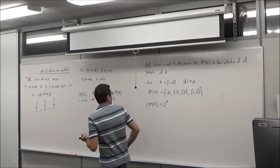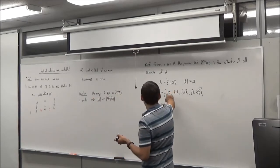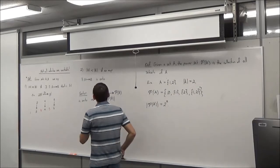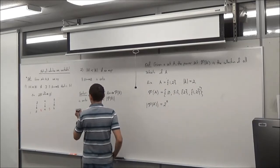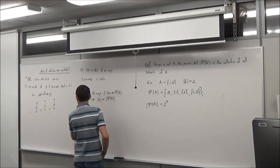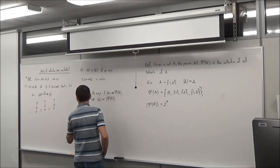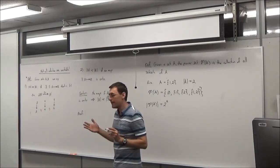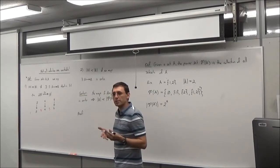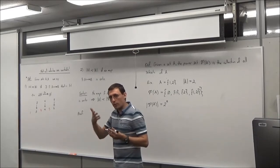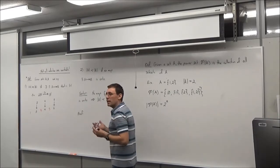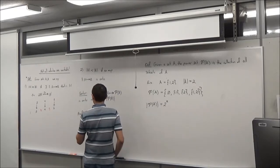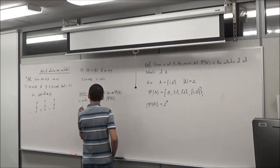Cantor's theorem: no map f from A to P(A) is surjective, which implies the cardinality of A is always strictly less than the cardinality of P(A) — even when A is infinite. The proof uses an intuition from a finite example before stating the abstract argument.